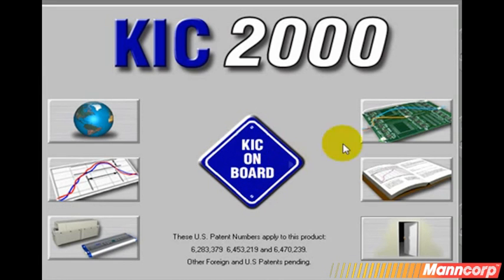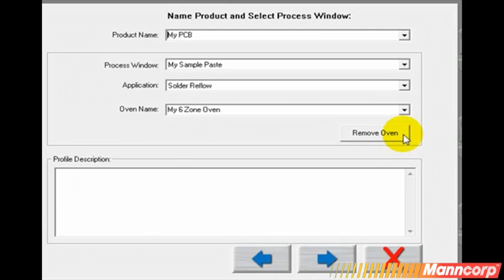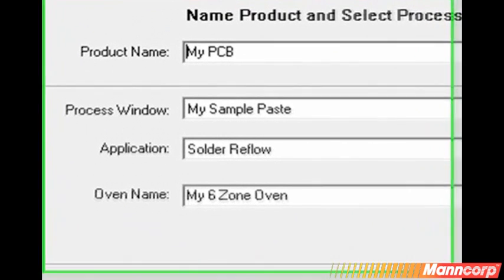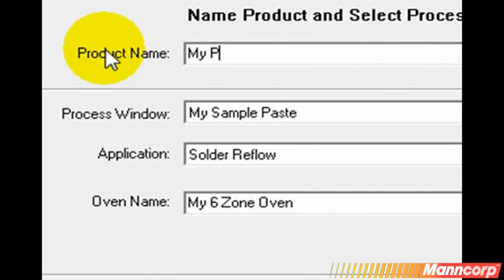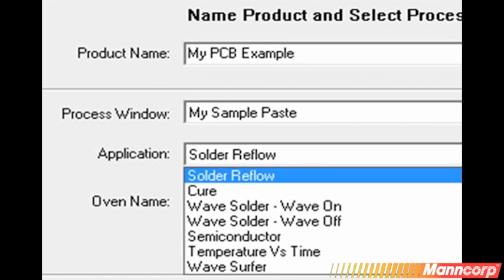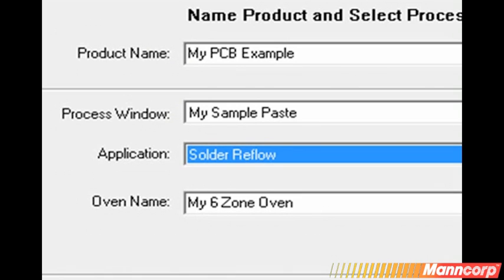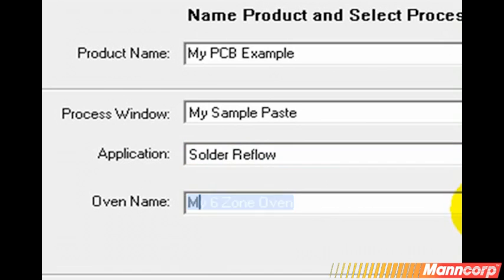We have set our global settings and defined our paste. Now we need to define for the software our oven setup. Here is the paste we just defined, preloaded automatically. I'm going to associate one or more boards with my defined process. I can choose from numerous application templates. In this case, we are profiling a reflow process.